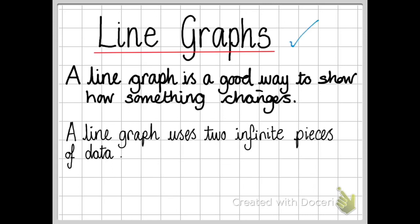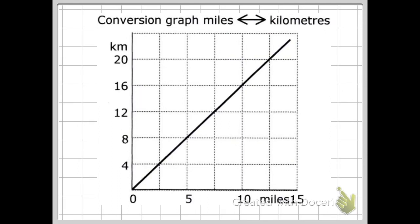So first of all, what is a line graph? A line graph is a good way to show how something changes. Line graphs normally should use two infinite pieces of data. So what is an infinite piece of data? Well, here's one: miles. Miles can go on forever. I can have 15 miles, 20 miles, I can have a million miles. Same with kilometers - they can go on for tens of millions or billions of kilometers.